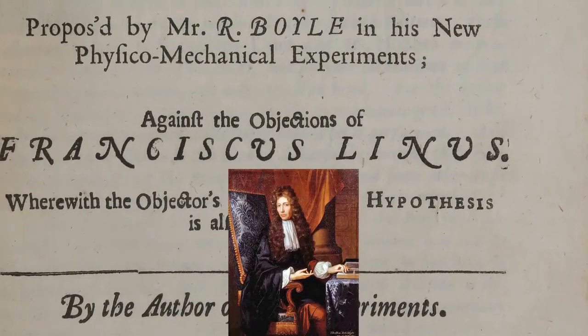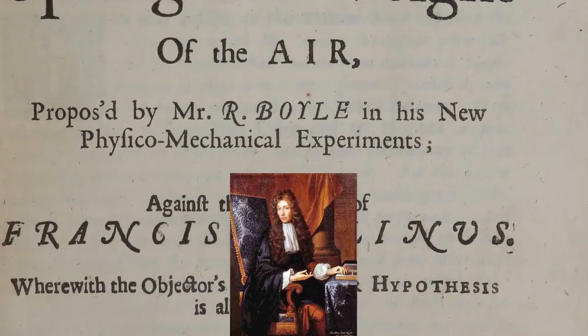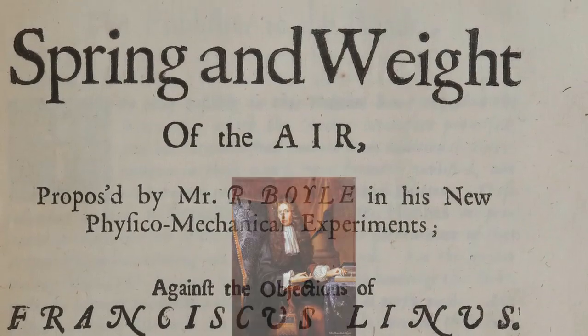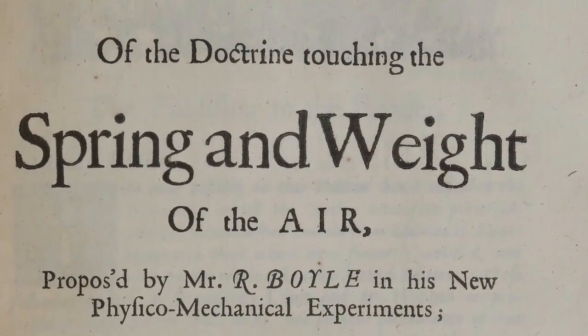Robert Boyle, having discussed this relationship with Townley, had already published it in 1662 as Mr. Townley's Hypothesis. For this paper, his assistant Robert Hooke procured a closed J-shaped tube,